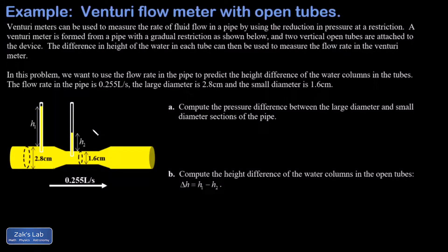In this video we're looking at a Venturi flow meter, a device for measuring the rate of fluid flow in a pipe. We put a constriction in there which causes the fluid velocity to increase in the constricted section. We can then use the pressure difference between the large and small sections to calculate the flow rate through the pipe.